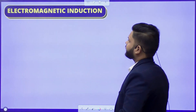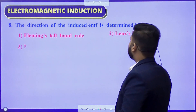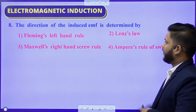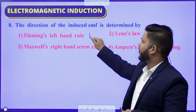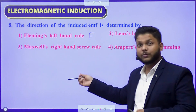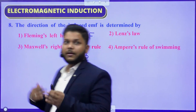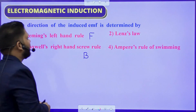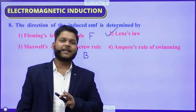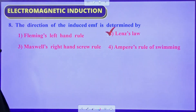Question number 8: The direction of the induced EMF is determined by which rule or law? Fleming's left hand rule is used for direction of force. Maxwell's right hand screw rule is used for magnetic field direction. Ampere's rule of swimming is used for finding North and South poles. Lenz's law is the one that tells us the direction of induced EMF or induced current. The correct answer is B — Lenz's law.